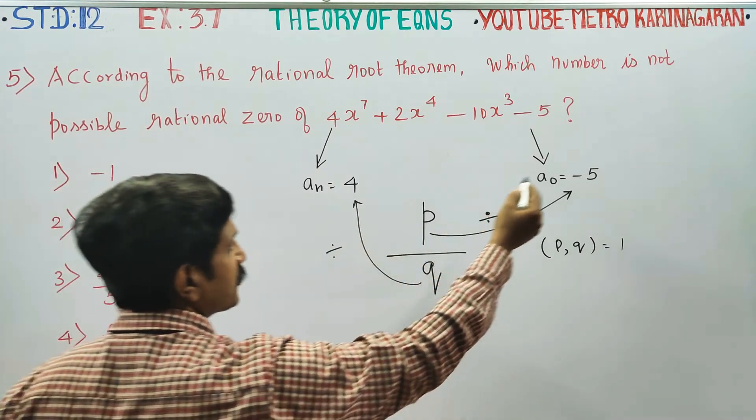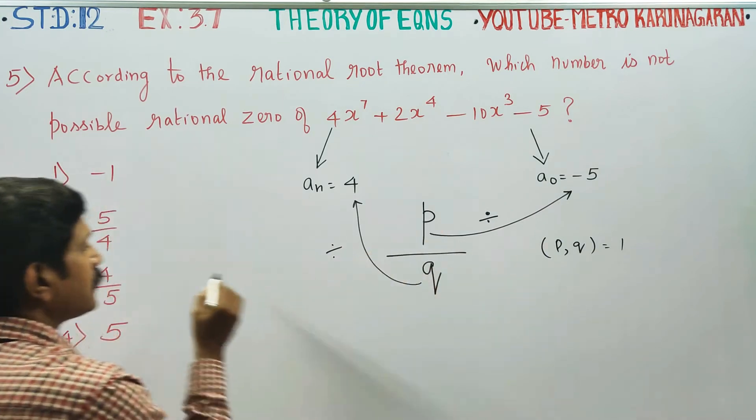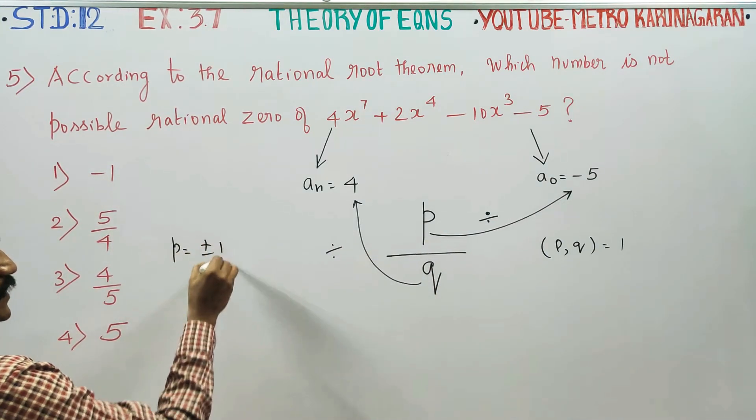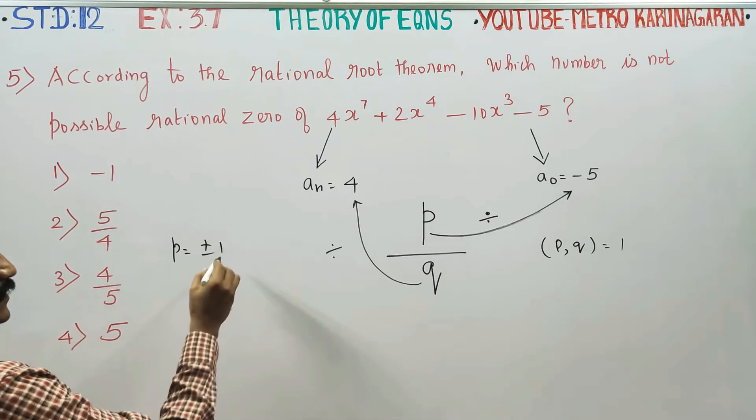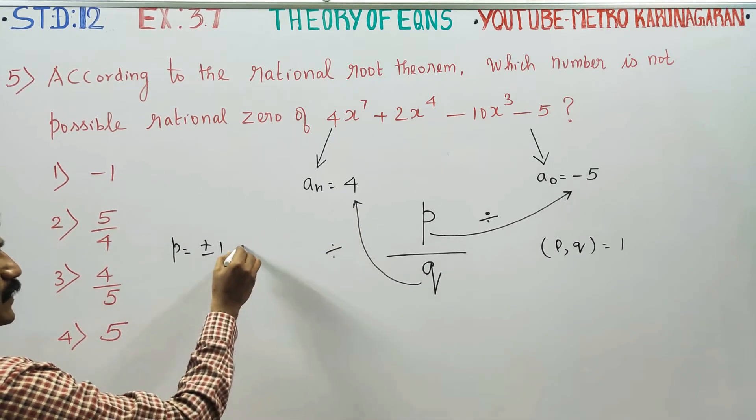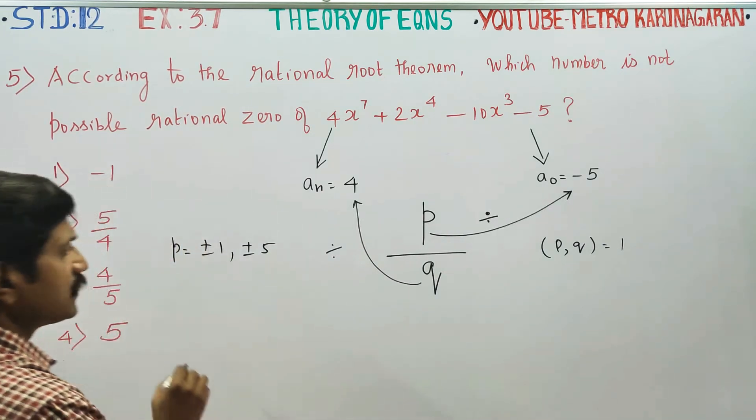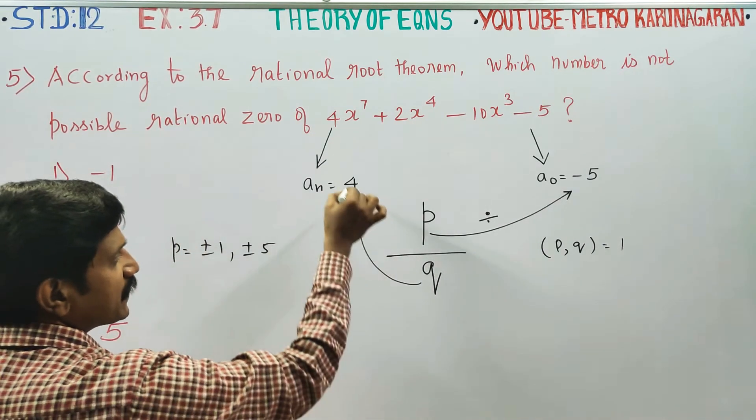What are the numbers which divide minus 5? The possible values of p are plus or minus 1 will divide 5, and plus or minus 5 will divide 5. That's all. Then what are the numbers which will divide 4?